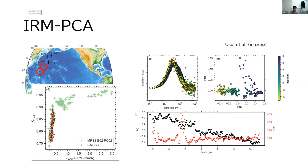I did similar analysis on another site northeast from site 777. This core shows low ARM susceptibility throughout, suggesting smaller contribution of biogenic magnetite.